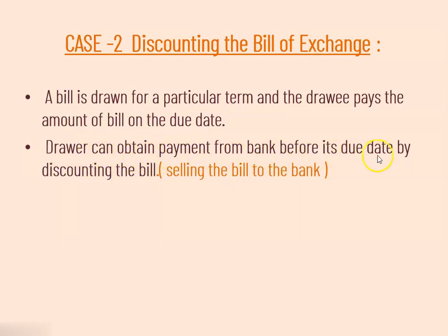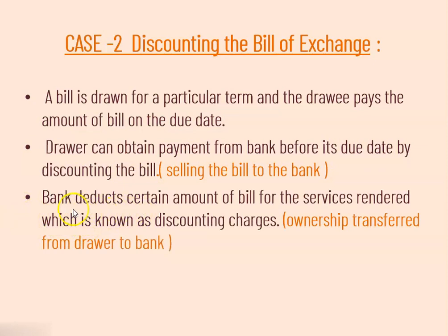The drawee can obtain payment from bank before the due date by discounting the bill. The bank deducts a certain amount of the bill for the services rendered, which is known as discounting charges. When the drawee is selling the bill to the bank before the due date, the bank is giving this facility to the drawee and takes certain charges because the drawee is getting payment before the due date. The ownership transfers from drawee to bank — now the bank is the owner.